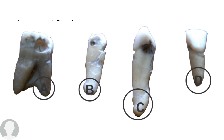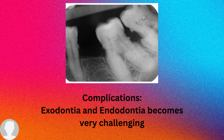From the name 'cementum,' you know it acts as cement — it anchors the tooth to the alveolar bone, provides tooth support, and works together with the principal collagen fibers of the PDL and alveolar bone. This is the main function of cementum.